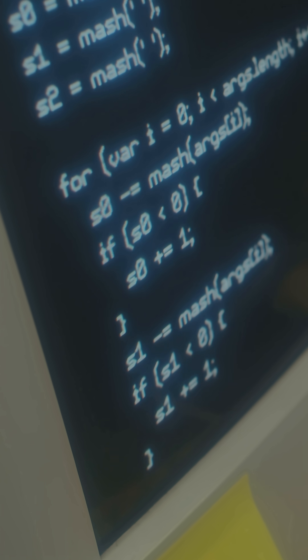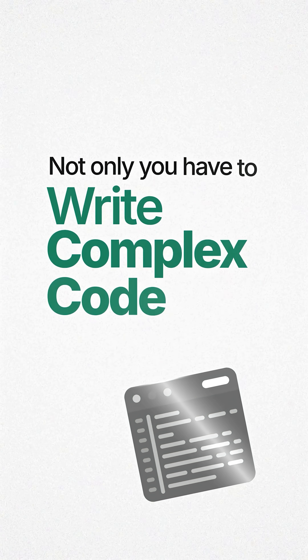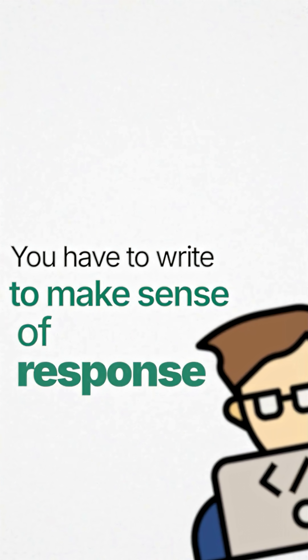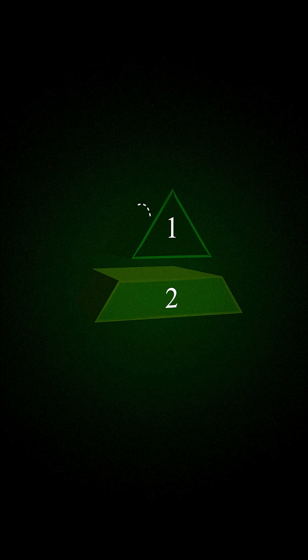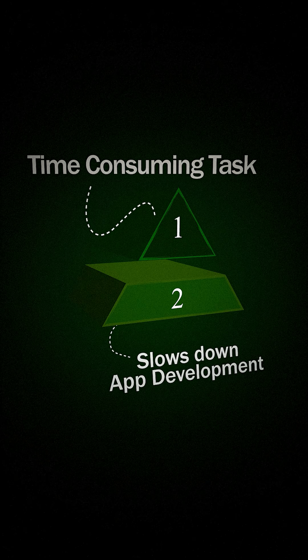Traditional programming follows rigid paths and structures, like if-this-then-that. You have to decide what tools to call and when to call them, all in advance. Not only would you have to write complex code to call the tools, you also have to write code to make sense of the responses you get back. This can be a very time-consuming task and really slows down app development.